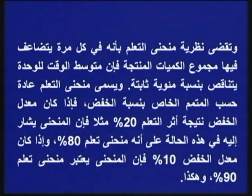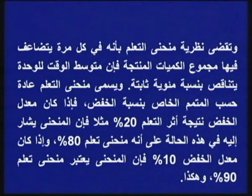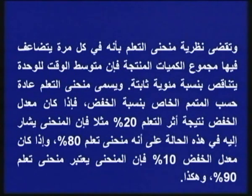نظرية منحنى التعلم تقول: في كل مرة يتضاعف فيها مجموع الكميات المنتجة، يتناقص متوسط الوقت للوحدة بنسبة مئوية ثابتة. ويُسمى منحنى التعلم حسب المتمم الخاص بنسبة الخفض؛ فلو كان معدل الخفض نتيجة أثر التعلم 20% فمنحنى التعلم يكون 80% (أي 100% ناقص 20%). ولو كان معدل الخفض 10% يكون منحنى التعلم 90%.